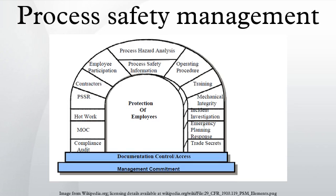A process includes any group of vessels which are interconnected or separate and contain highly hazardous chemicals which could be involved in a potential release. A process safety incident is the unexpected release of toxic, reactive, or flammable liquids and gases in processes involving highly hazardous chemicals. Incidents continue to occur in various industries using chemicals that exhibit toxic, reactive, flammable, or explosive properties. Regardless of industry, there is a potential for an accidental release any time they are not properly controlled, which creates the possibility of disaster. To help assure safe and healthy workplaces, OSHA has issued the Process Safety Management of Highly Hazardous Chemicals Regulation, which contains requirements for the management of hazards associated with processes using highly hazardous chemicals.